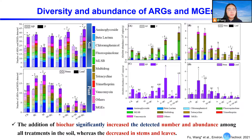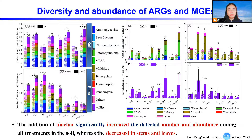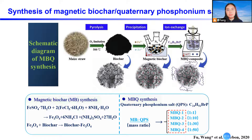For antibiotic resistance genes, a quite similar effect was observed. With biochar, it increased the detected number and abundance of ARGs in the soil, but decreased the abundance and numbers of ARGs in the stem and leaves. This shows that the combination with biochar could be a potential strategy to reduce the transfer of ARGs from soil to the plant.